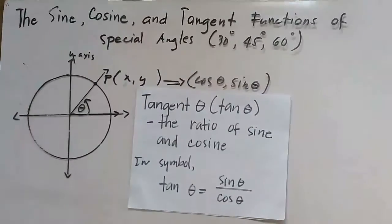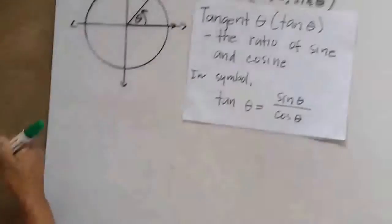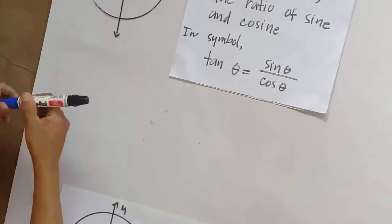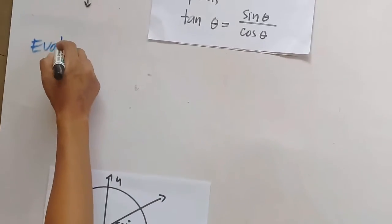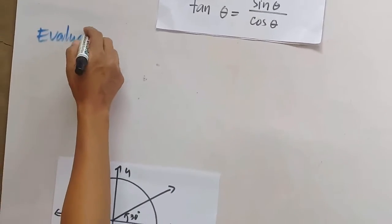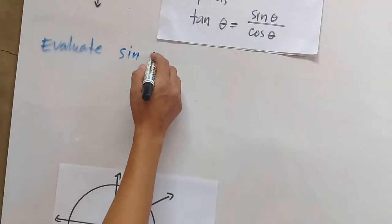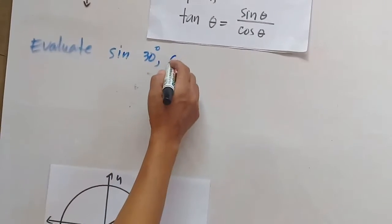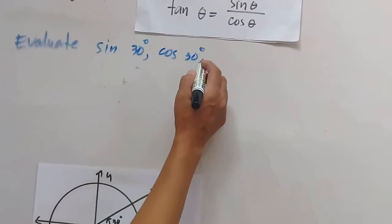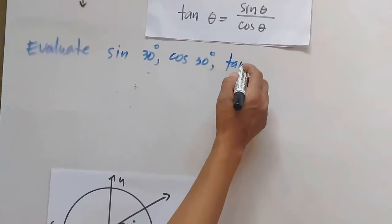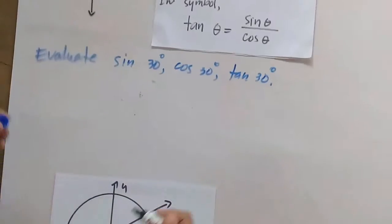Let's have an example. Let us evaluate sine 30 degrees, cosine 30 degrees, and tangent 30 degrees.